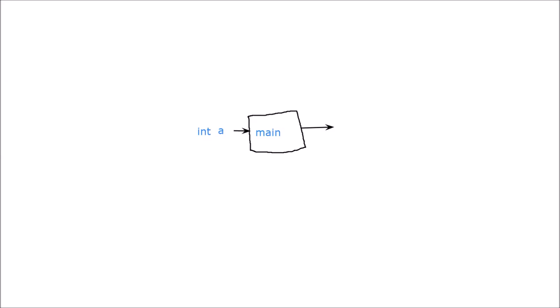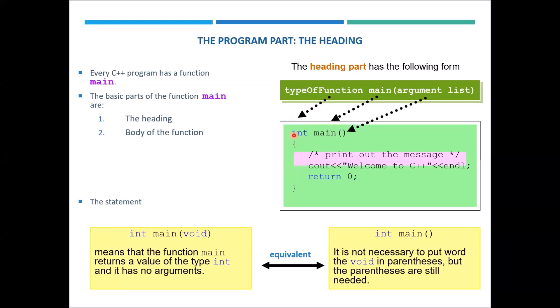So if we try to understand: we have some input of a particular type, but we have not written the name of the variables A or B. In the main function, we always write the type, most of the time 'int', and here we have the input argument list. If we leave the bracket empty, it means there is no input needed to execute the function.